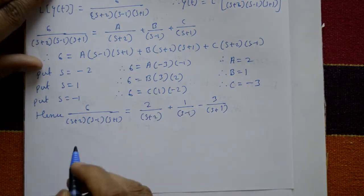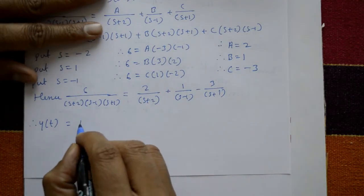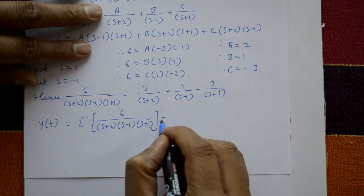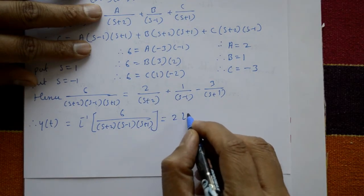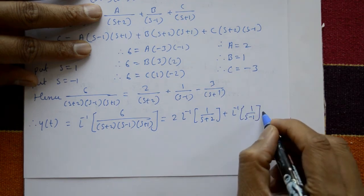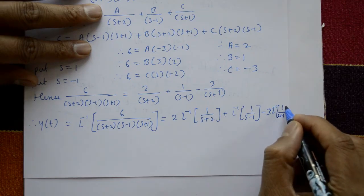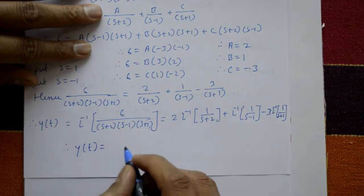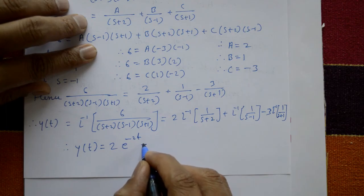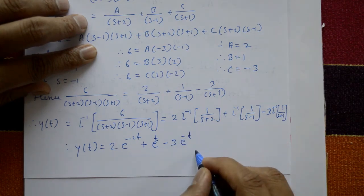Therefore y(t) = L⁻¹{6/[(s+2)(s-1)(s+1)]} = 2·L⁻¹{1/(s+2)} + L⁻¹{1/(s-1)} - 3·L⁻¹{1/(s+1)} = 2e^(-2t) + e^t - 3e^(-t). This is the required solution.